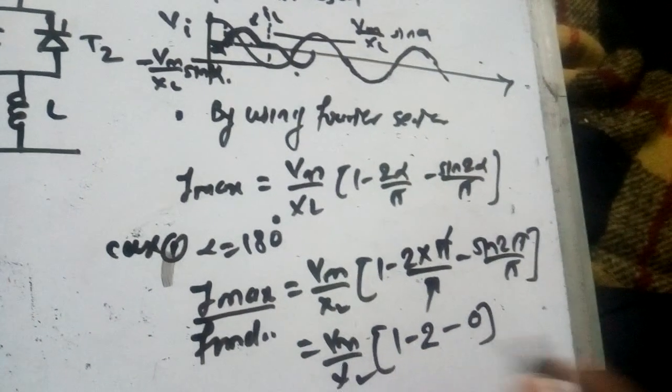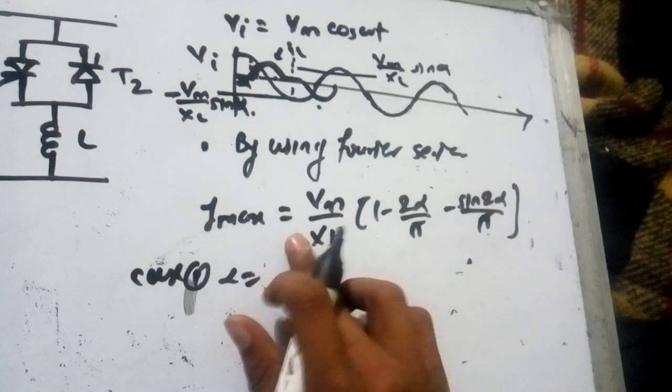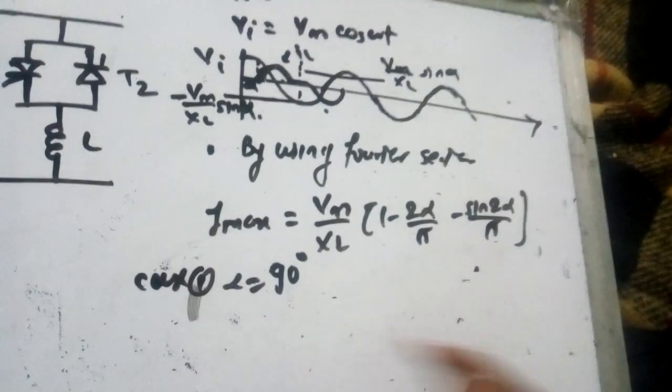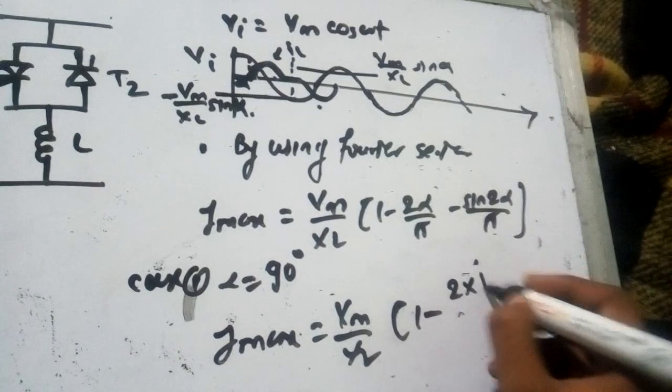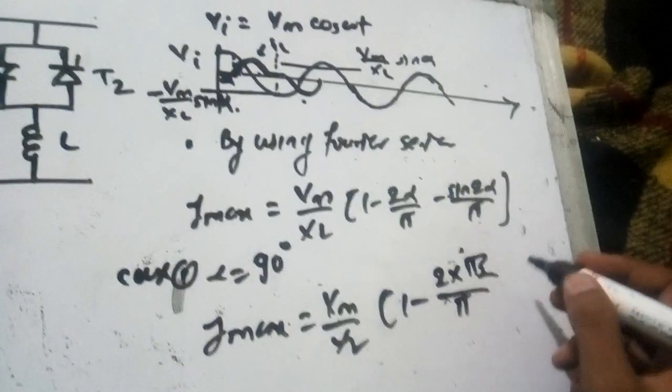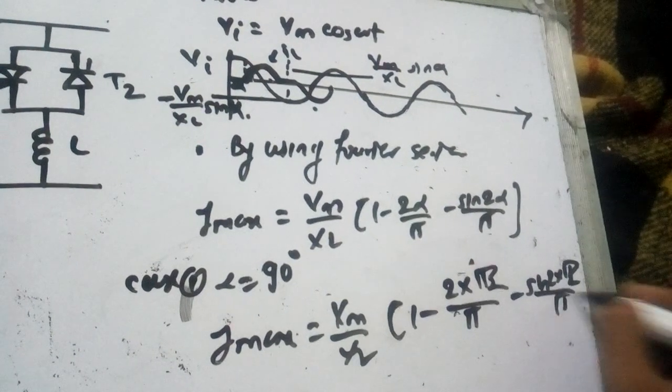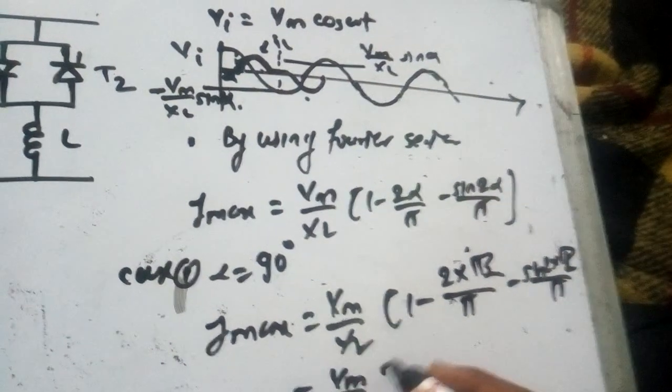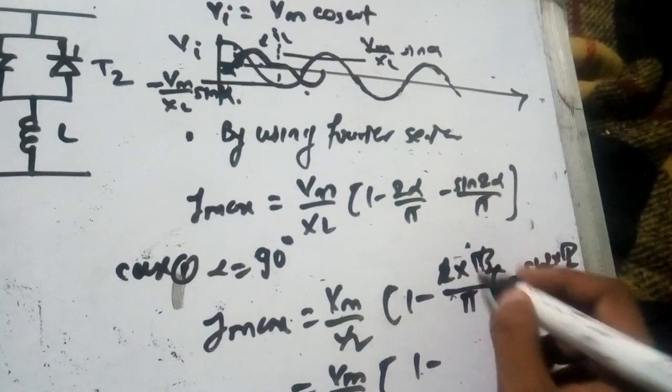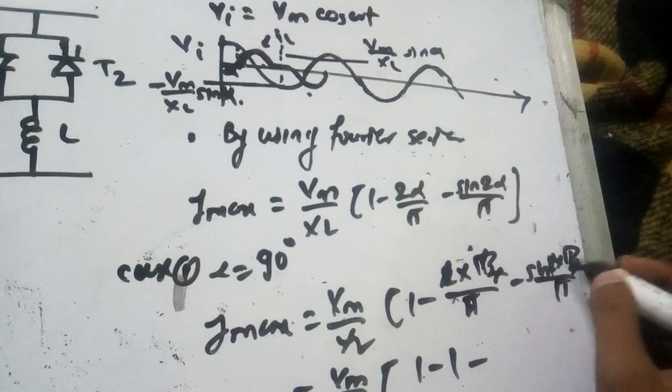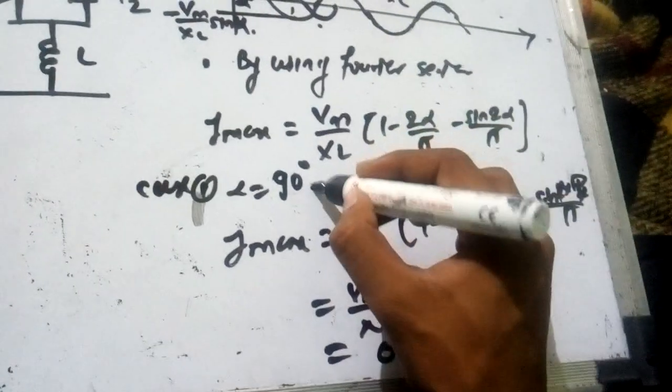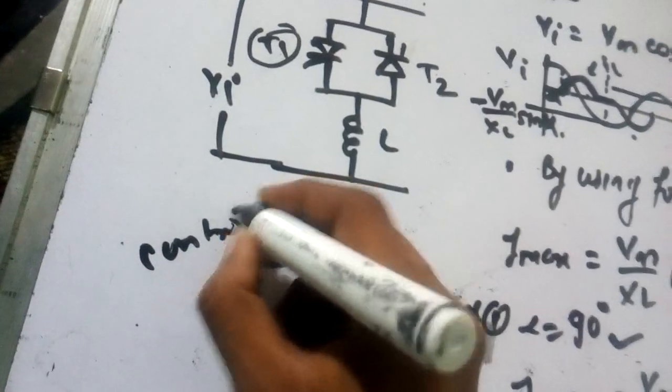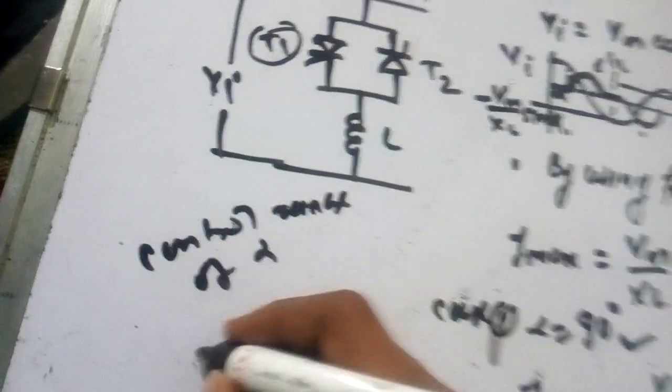For alpha equal to 90 degrees, Imax equals Vm upon XL times one minus two times pi by 2 upon pi minus sine pi upon pi. This becomes 1 minus 1, so at 90 degrees current becomes 0. Hence the control range is from 0 to 90 degrees.